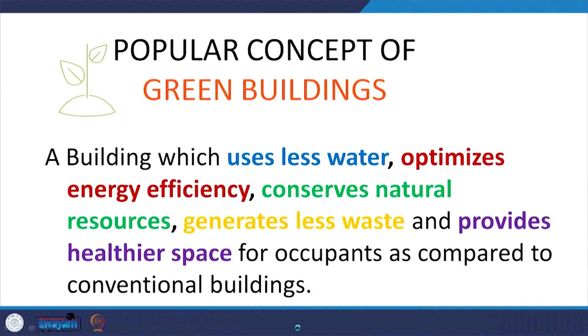The most popular concept is that of a green building — a building which uses less water, optimizes energy efficiency, conserves natural resources, generates less waste, and provides healthier spaces for occupants as compared to a conventional building. Out of all the concepts related to sustainable architecture, the green building concept has become very popular. One of the most important reasons is that green building rating systems have come into place, and because of these rating systems we can assess the performance of our buildings — there is a benchmark, and comparisons between buildings become possible.